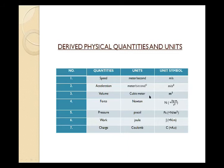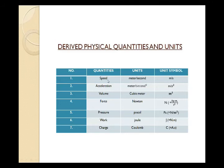An example of a derived quantity is speed. The formula for speed is distance divided by time. Distance belongs to length — a fundamental quantity — and time is also a fundamental quantity. When both are combined, we get a new physical quantity: speed. Speed = distance / time. The unit of speed is meter per second, represented as m/s or m·s⁻¹.